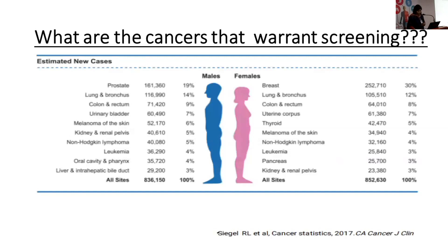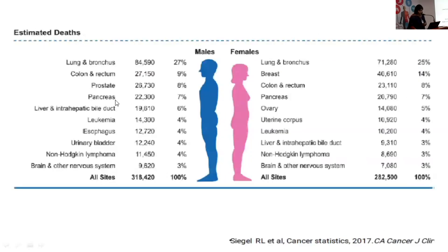Looking at global data, the commonest cancers in women are breast, lung, colorectal, and cervix; in males it is prostate, lung, and colorectal. When looking at cancer-related mortality — what cancers are lethal — lung is on top for both sexes, followed by colon and rectum in males and breast in women.